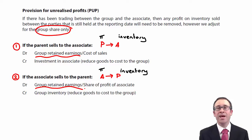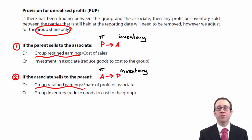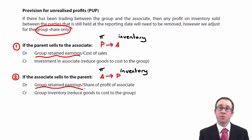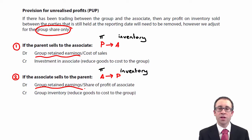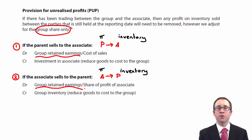Recap — P sells to A: P has the profit, A has the inventory. We want to process a credit but can't credit inventory because A owns the inventory and it's not within the group accounts. So we credit the investment in associates. The debit entry in the group statement of financial position goes to group retained earnings, as it is always the group that has the influence. But when being specific in the statement of profit or loss, we debit the cost of sales as the parent has the profit, removing that PUP from the parent's profit.